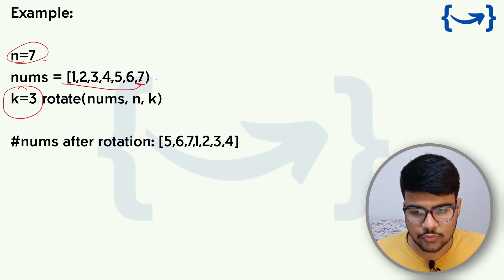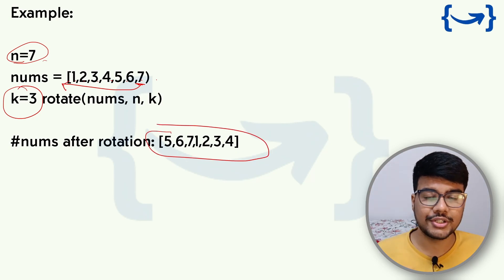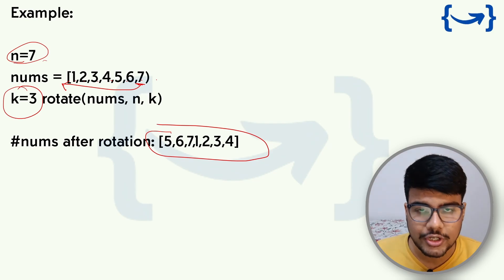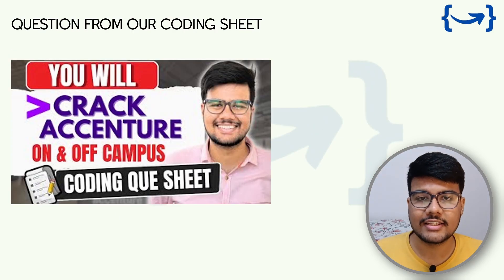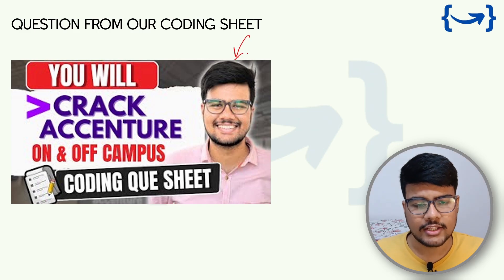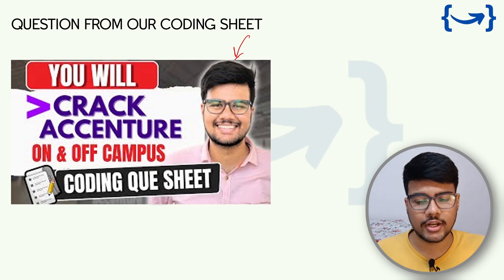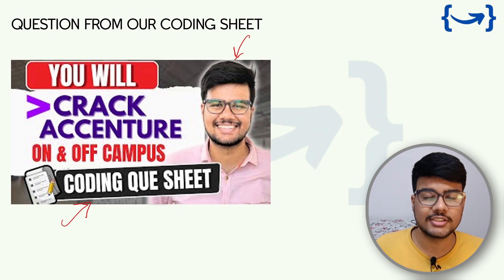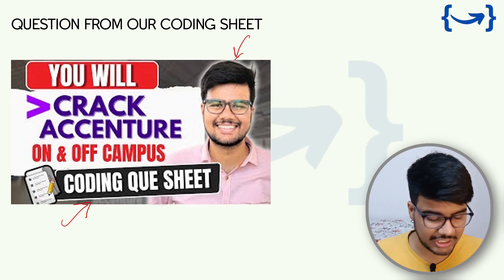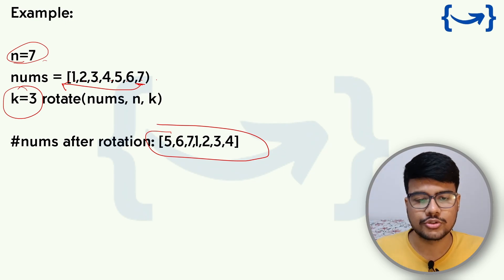For example, if the array is [1, 2, 3, 4, 5, 6, 7] and K is 3, rotating from the right towards the left gives you [5, 6, 7, 1, 2, 3, 4]. This question is repeated in TCS NQT as well, and the Essential coding sheet contains the same problem. You can find the playlist link in the description.